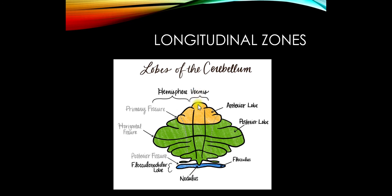We also think of the cerebellum in terms of zones. You have the vermis; moving out laterally is the paravermis, and then the lateral hemisphere. The more midline something is in the cerebellum, the more it coordinates midline musculature. The further laterally we go, the more it coordinates distal musculature. So the lateral zone handles fine motor tasks — using tools, typing, playing an instrument — while the midline is more related to walking and balance, and the flocculonodular lobe to eye movements.